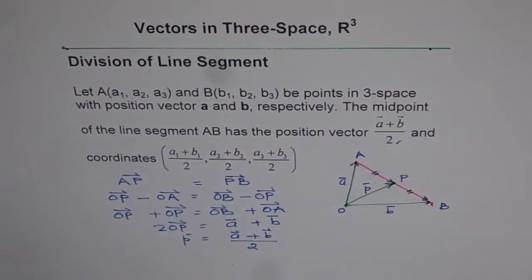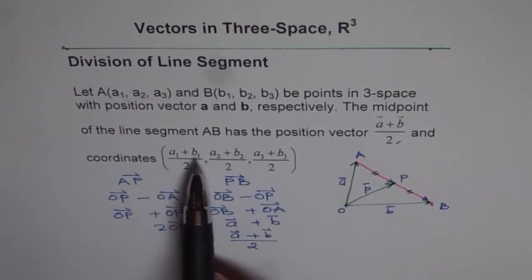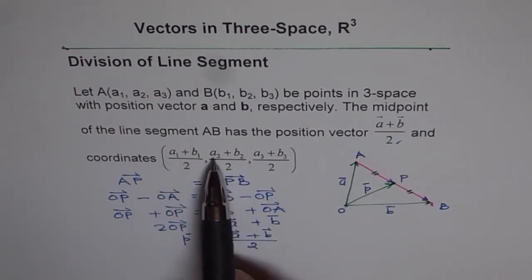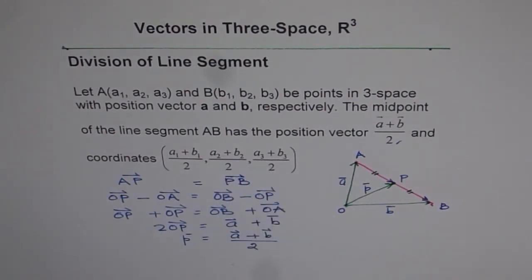So we prove that the midpoint of AB has a position vector which is A plus B by 2 and its coordinates will be average of the 2. That is A1 plus B1 divided by 2, A2 plus B2 divided by 2, A3 plus B3 divided by 2.